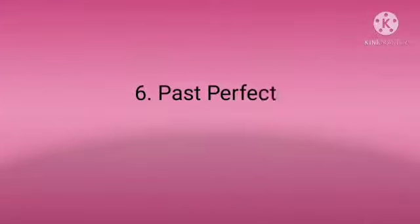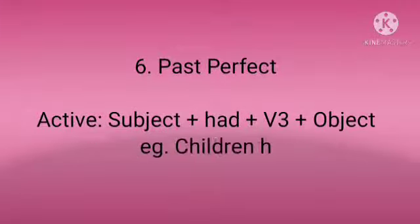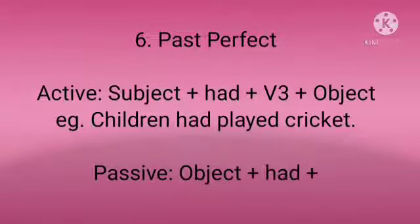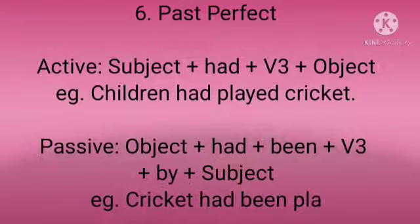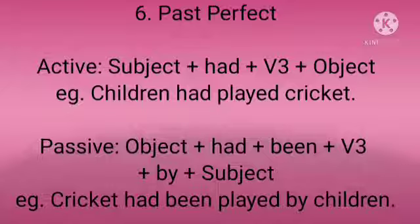As we all know, we use has or have with third form of verb or past participle for present perfect tense according to the number of the subject, and had in past perfect tense irrespective of any number. So the example here taken of past perfect in active voice is children had played cricket, which changes in passive voice as cricket had been played by children. So the structure in passive voice is object plus had plus been plus third form of verb, followed by preposition by plus subject.